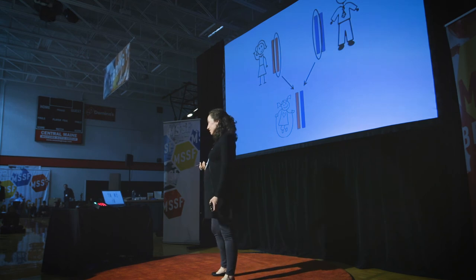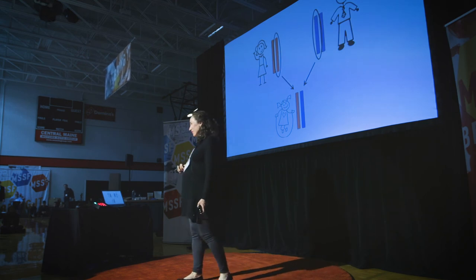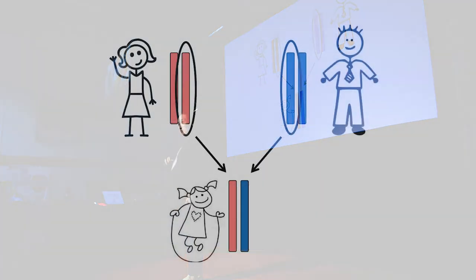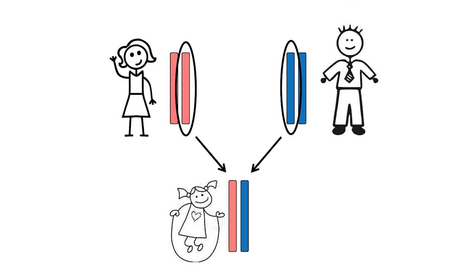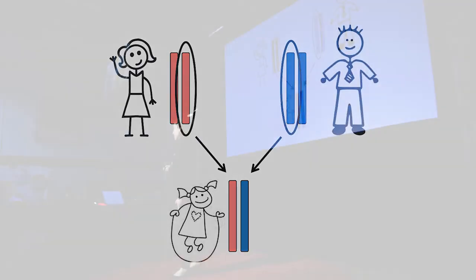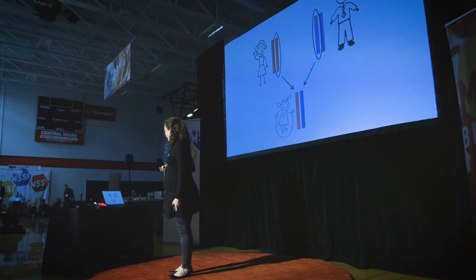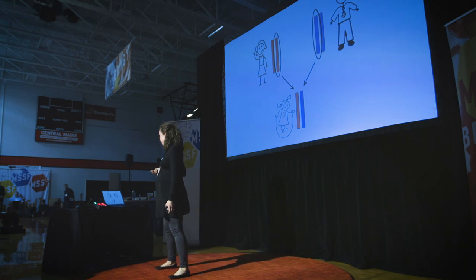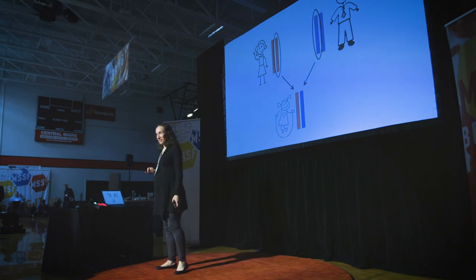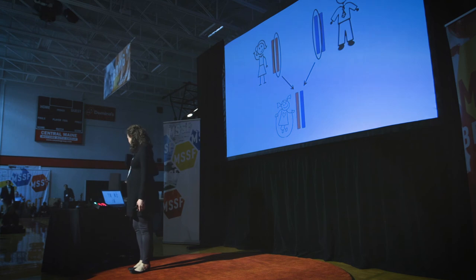Coming back to this very simple model of inheritance: it's absolutely true that we each get one copy of each of our chromosomes from our mom and one copy from our dad. But there's a lot of complexity hidden behind this simple model, and I think that complexity is really interesting and fascinating to study. Thank you very much.